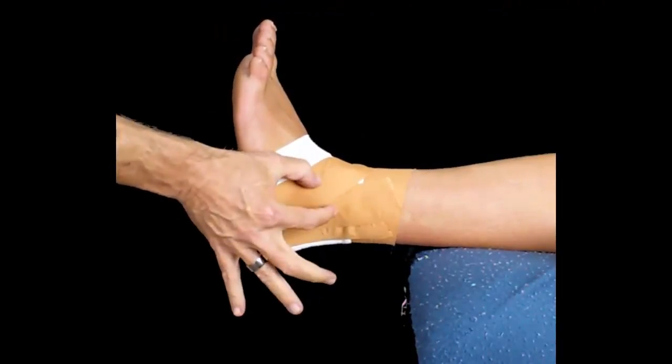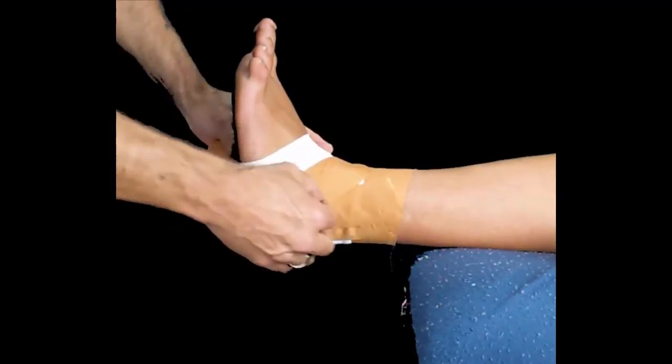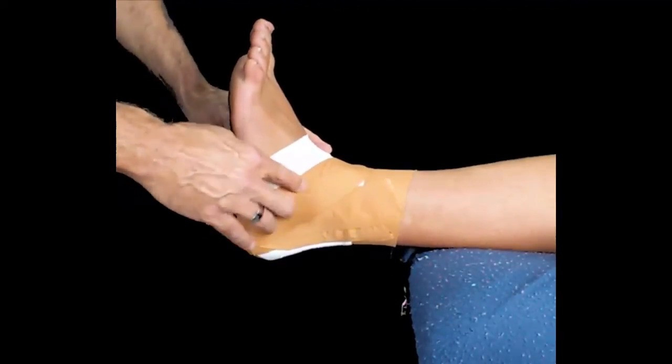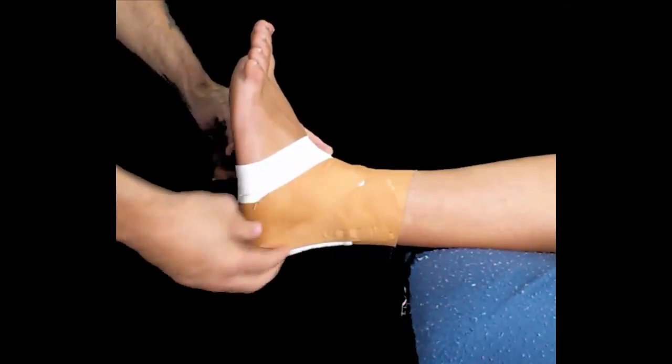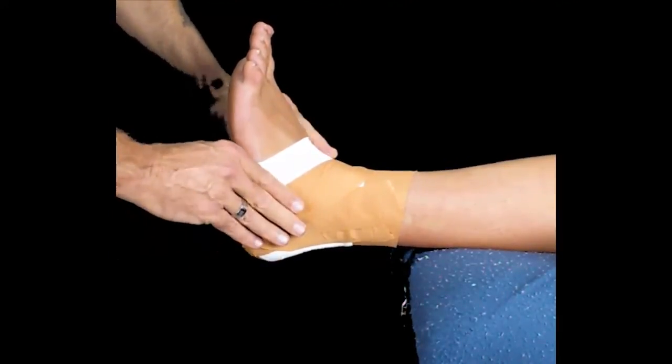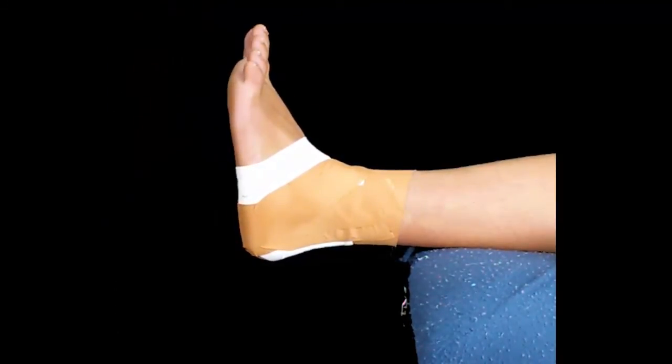Make sure we're coming far enough forward to cover and support the ligaments just below the bump on the ankle. These are ligaments that will get damaged if the ankle rolls. We want to make sure the tape is far enough forward to support the ankle and reduce the chances of it rolling in.